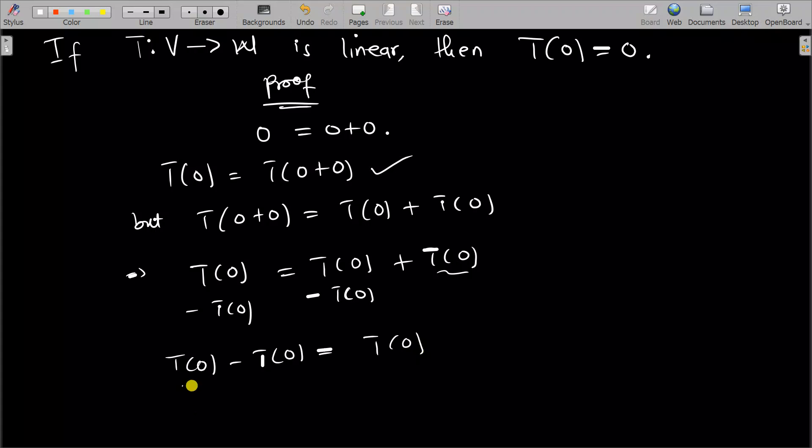Now, what is something minus the same thing? I'm going to have 0, right? So, 0 is equal to T(0). So, it means that T(0) is actually the 0 vector.